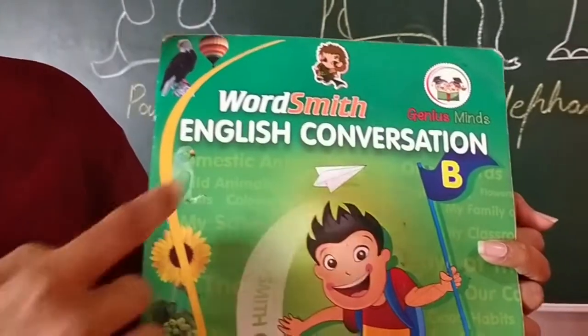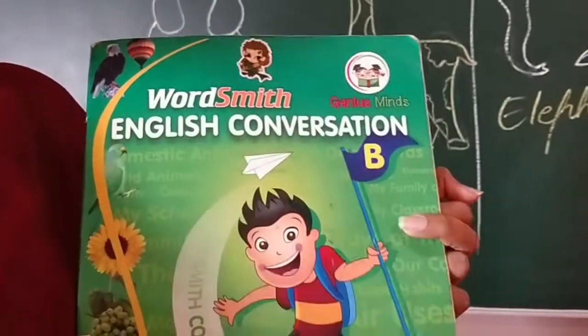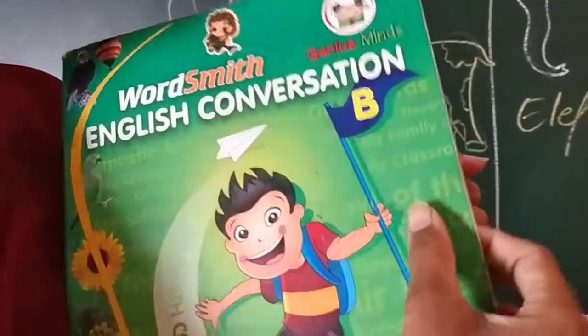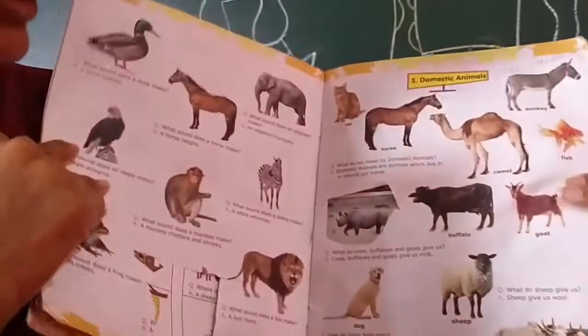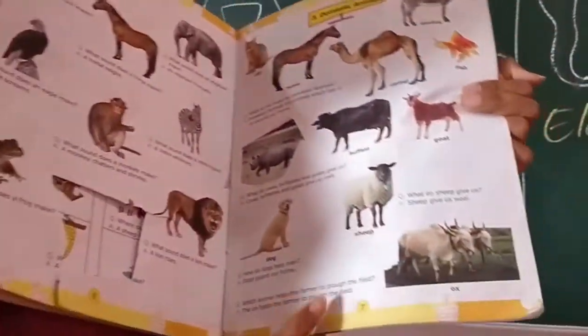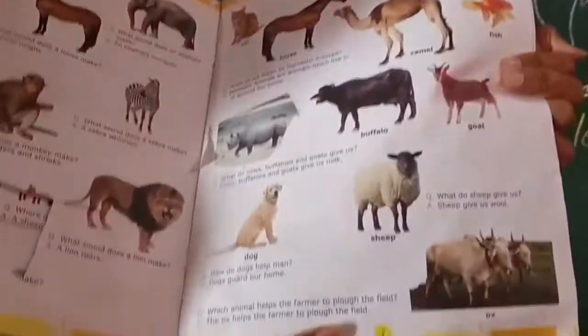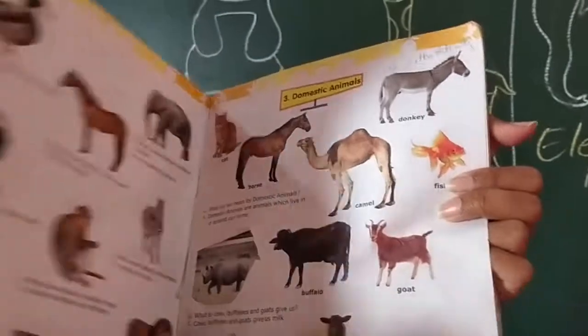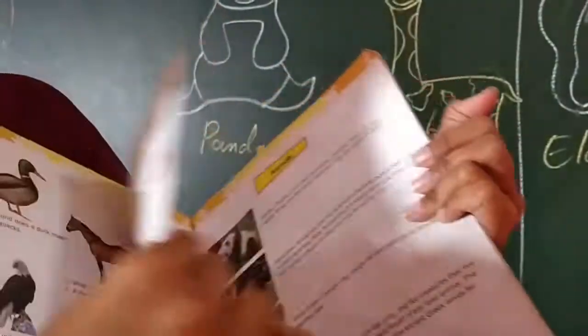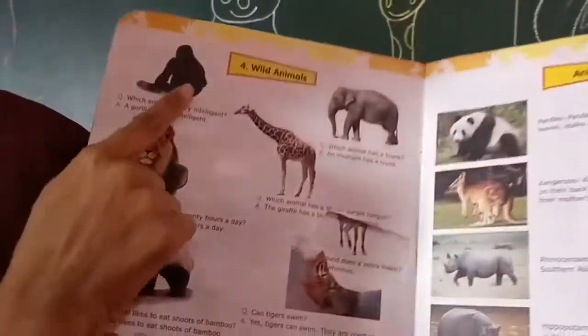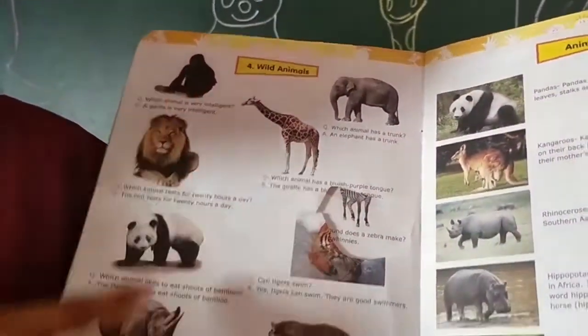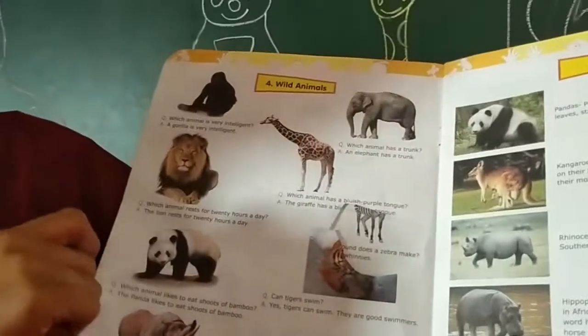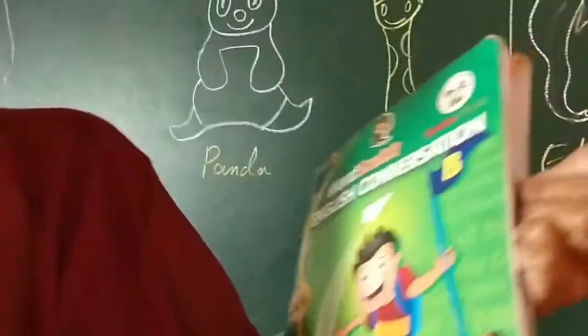Children, this is a Wordsmith English conversation book. Open page number 7 for domestic animals — refer this page. And wild animals are on page number 8 — refer this, children. Thank you.